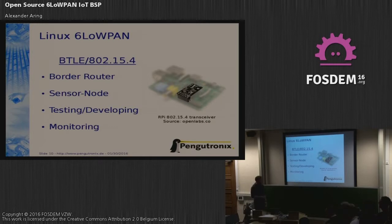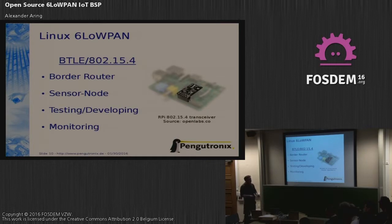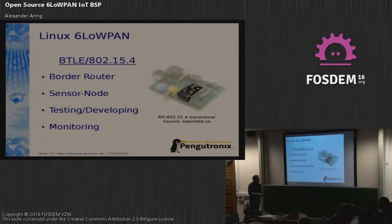We also have some users who only want a sniffer/monitor device. With this transceiver and Ethernet you can run Wireshark on your desktop PC and pipe the Wireshark traffic over Ethernet over the network, and this way it appears on your desktop PC.